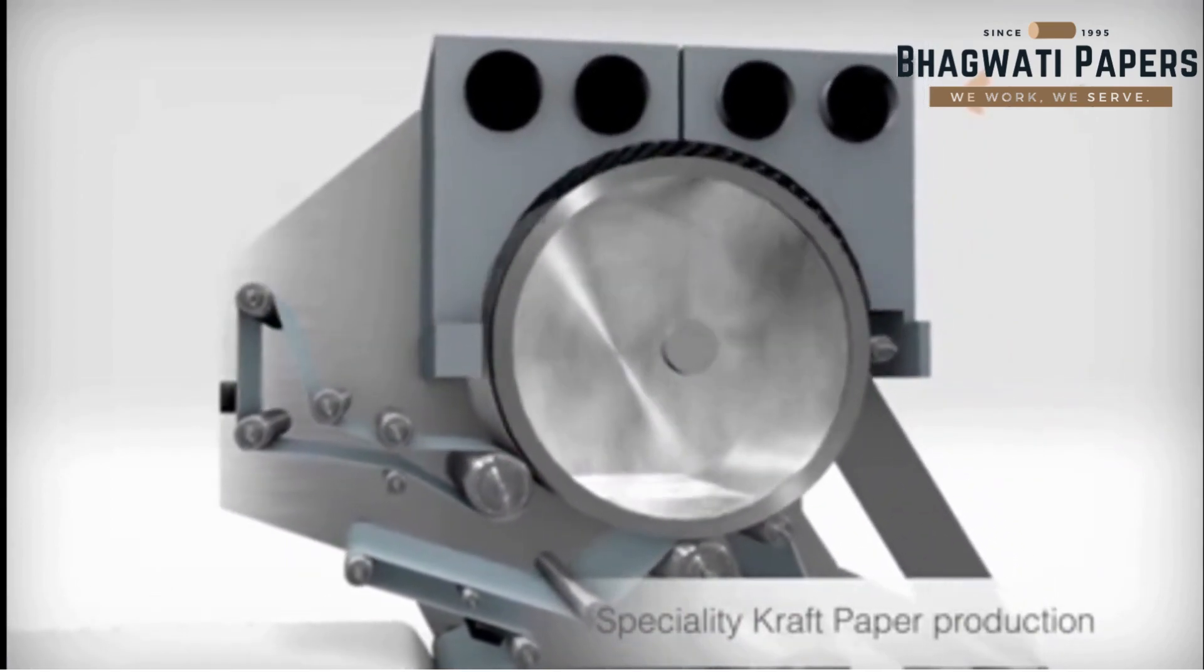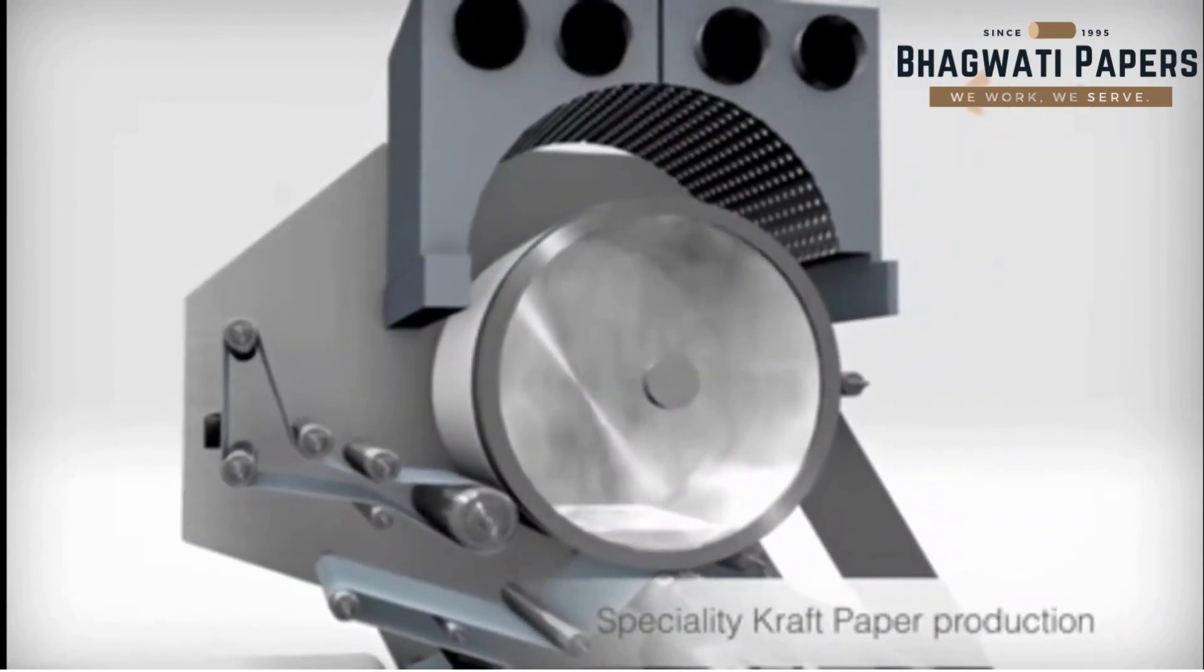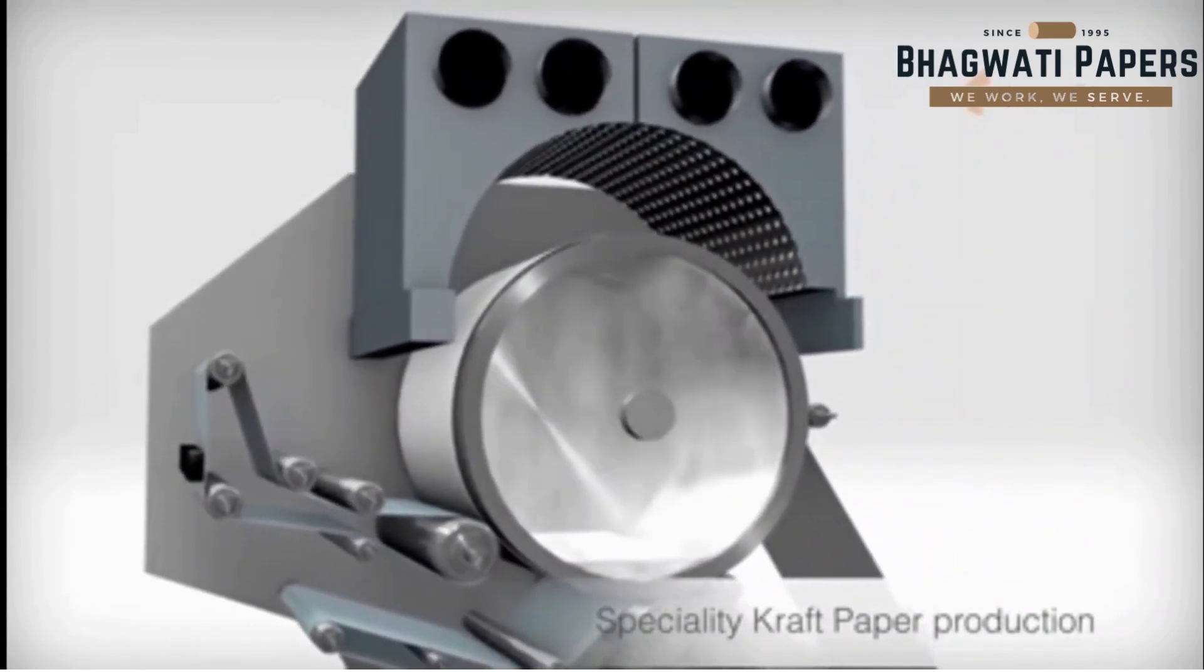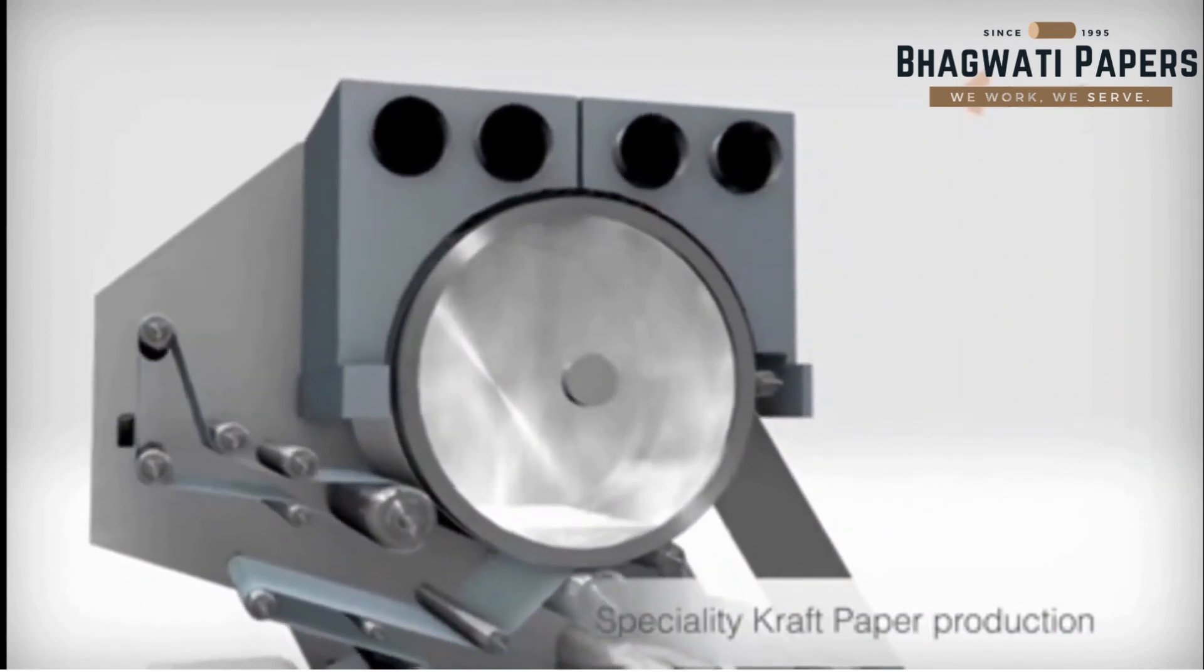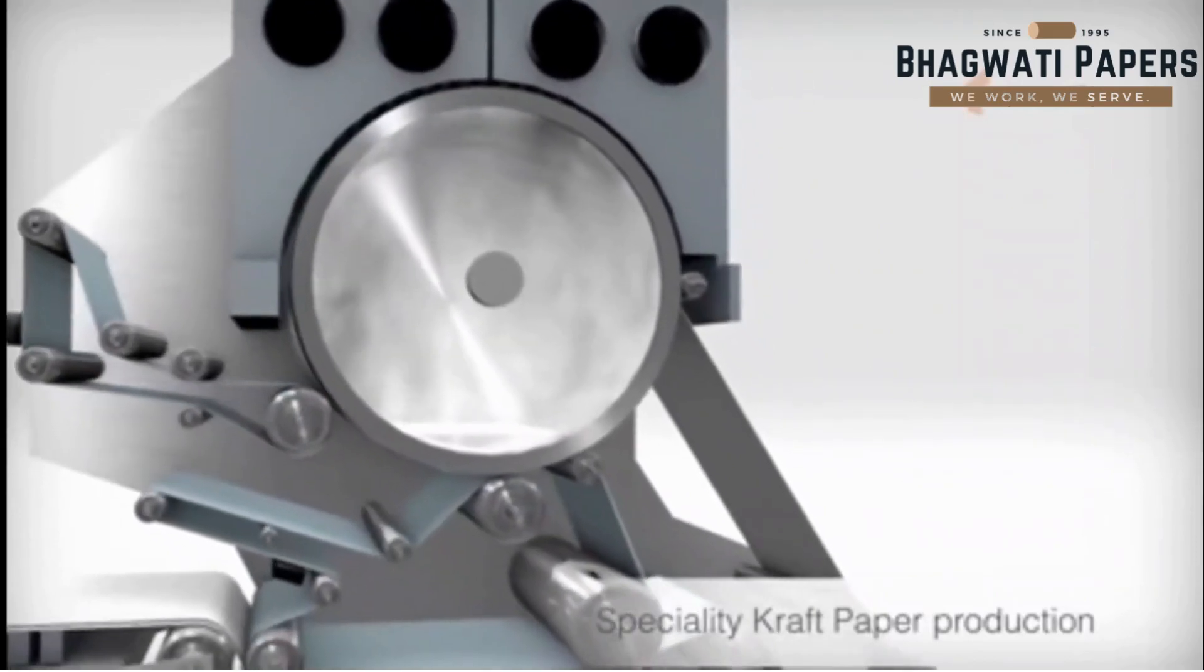The cylinder is covered by the Yankee hood. It dries the paper from behind with hot air, at a maximum temperature of 300 degrees centigrade.